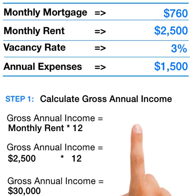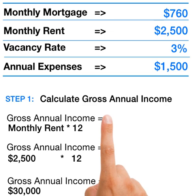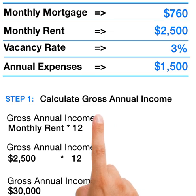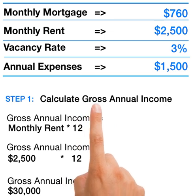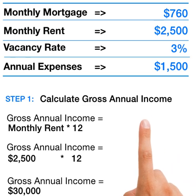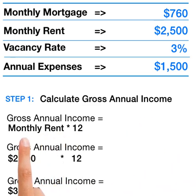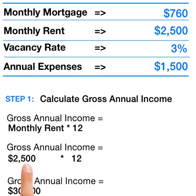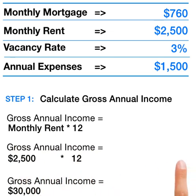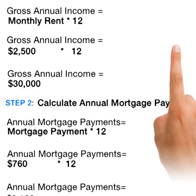We'll start calculating the break-even ratio. First, you need to calculate the gross annual income. It's calculated by multiplying the monthly rent by 12. In our case, $2,500 times 12 equals $30,000, which will be the gross annual income.